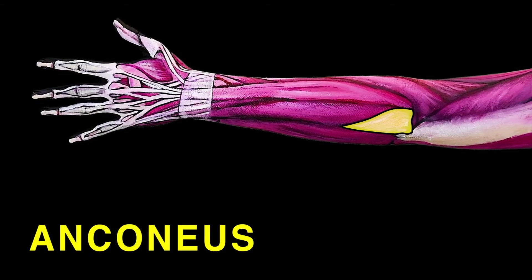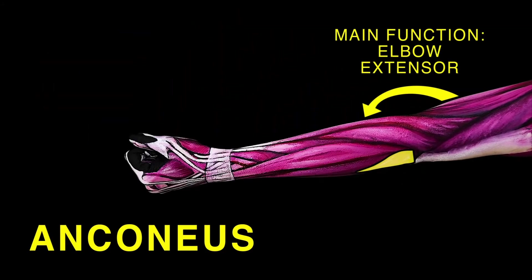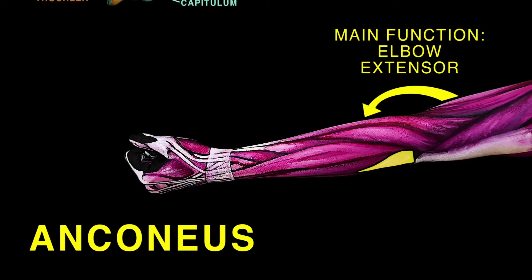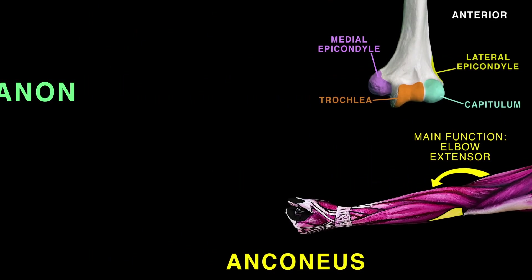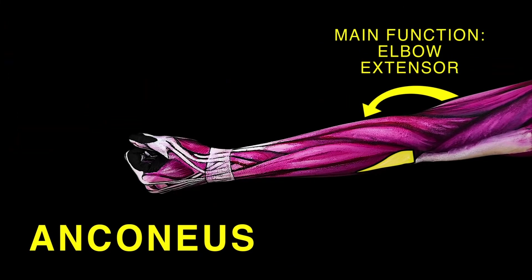The anconeus is on the elbow joint's posterior aspect. It extends and rotates the elbow and rotates the forearm. Its fibers blend with those of the triceps brachii, such that these two muscles can be indistinguishable. The anconeus originates from the lateral epicondyle and attaches to the posterior and lateral part of the olecranon, and abducts the ulna during forearm pronation.